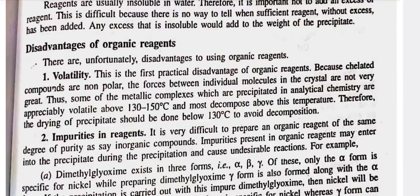Disadvantages of organic reagents: There are unfortunately disadvantages to using organic reagents. First, volatility — this is the first practical disadvantage of organic reagents. Because chelated compounds are non-polar, the forces between individual molecules in the crystal are not very great. Thus, some of the metallic complexes which are precipitated in analytical chemistry are appreciably volatile above 130–150 degrees Celsius, and most decompose above this temperature. Therefore, the drying of precipitate should be done below 130 degrees Celsius to avoid decomposition.